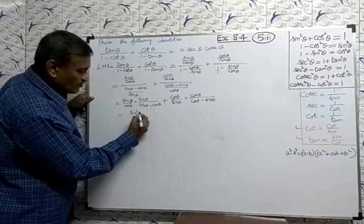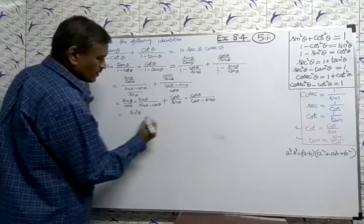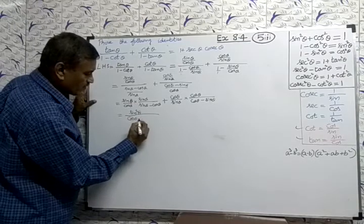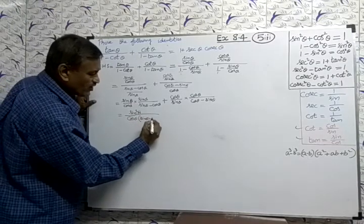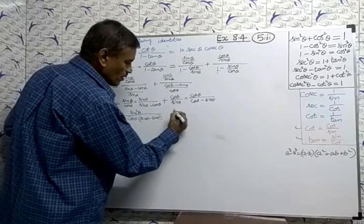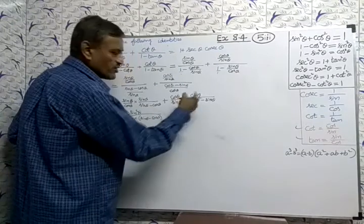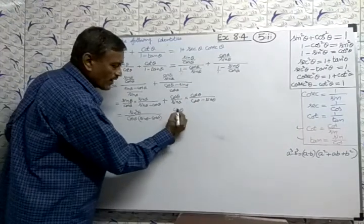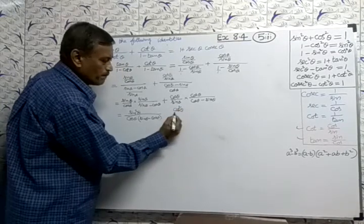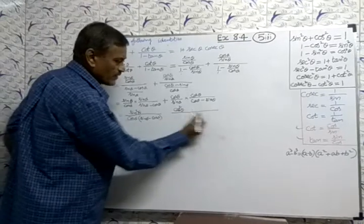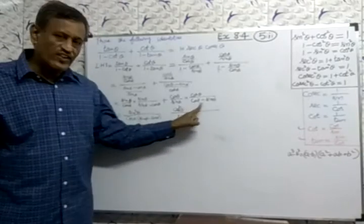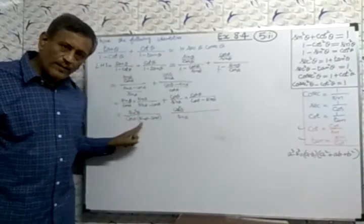After reciprocal multiplication, the numerator upside clearly gives sine square theta by cos theta into (sine theta minus cos theta), and here cos square theta by sine theta into (cos theta minus sine theta). We want sine theta minus cos theta, so I need to change the sign in the second term.